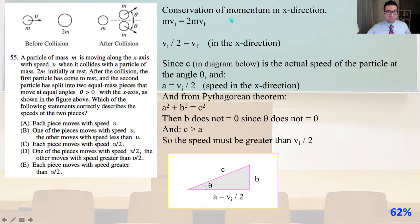We apply conservation of momentum in the x direction. mvᵢ equals 2mvf. vᵢ over 2 equals vf in the x direction. Since C in the diagram is the actual speed of the particle at angle theta, and A is our speed in the x direction equaled vᵢ over 2, we can apply the Pythagorean theorem: A² plus B² equals C². B does not equal zero because theta does not equal zero. So C must be greater than A. The speed must be greater than vᵢ over 2. That is answer E.